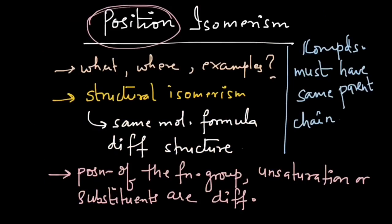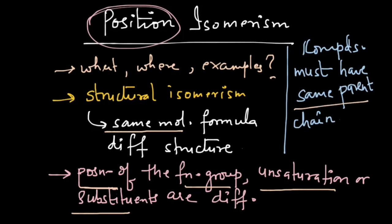To summarize, position isomerism is observed when there is a difference in the position of the functional group, unsaturation, or substituents. Before checking for position isomerism, you must verify that the compounds have the same molecular formula and the same parent chain length. In the next video we will talk about functional isomerism.